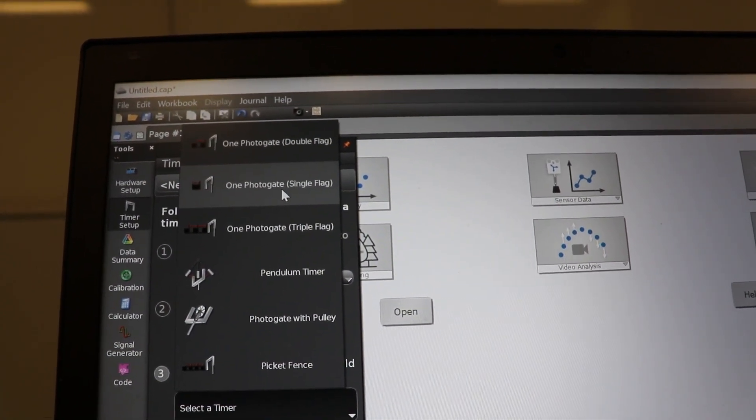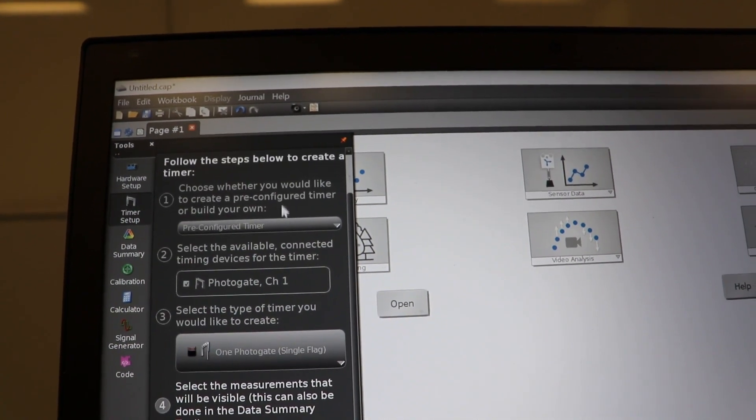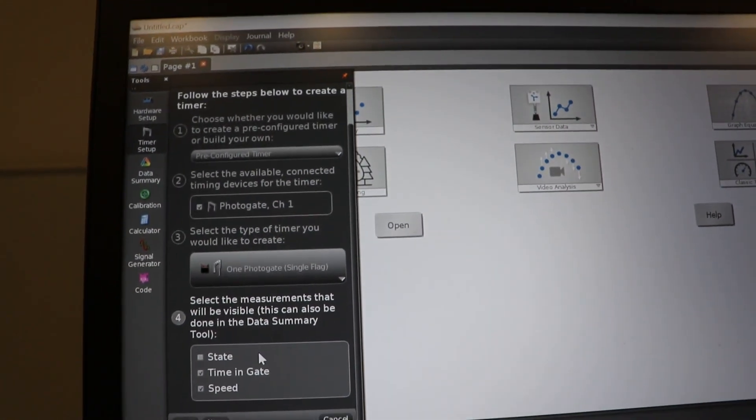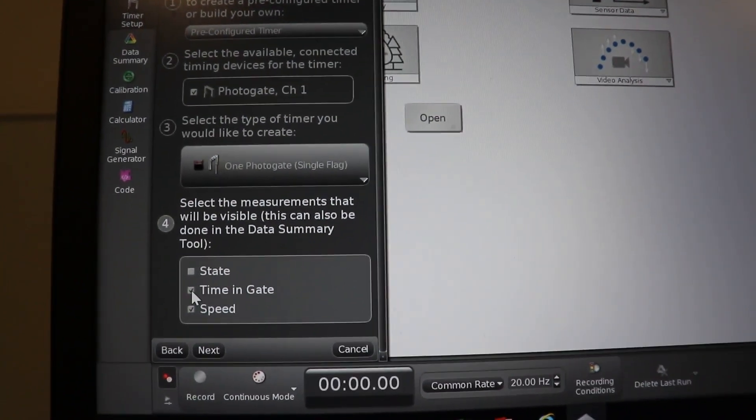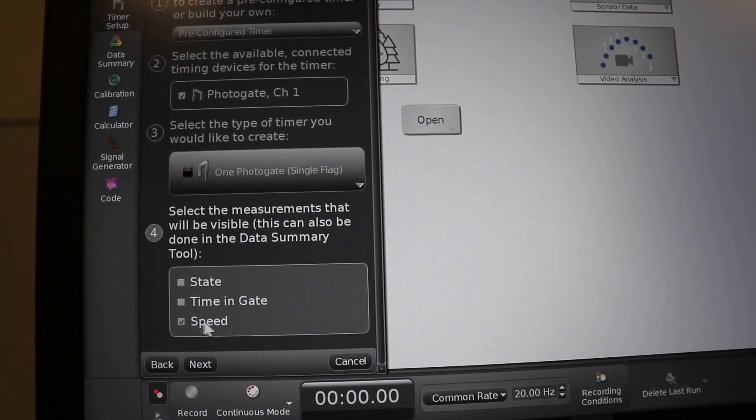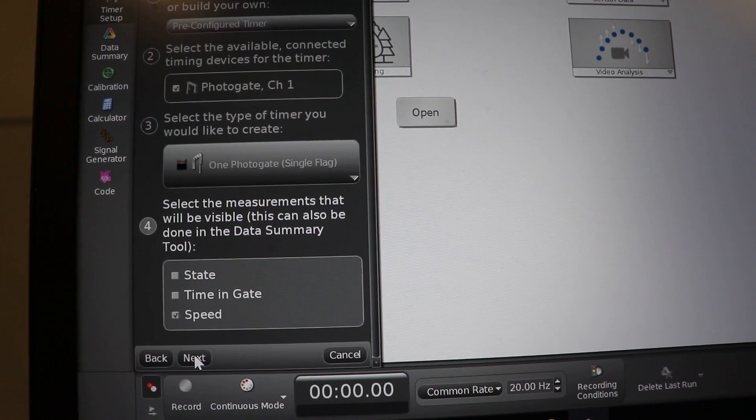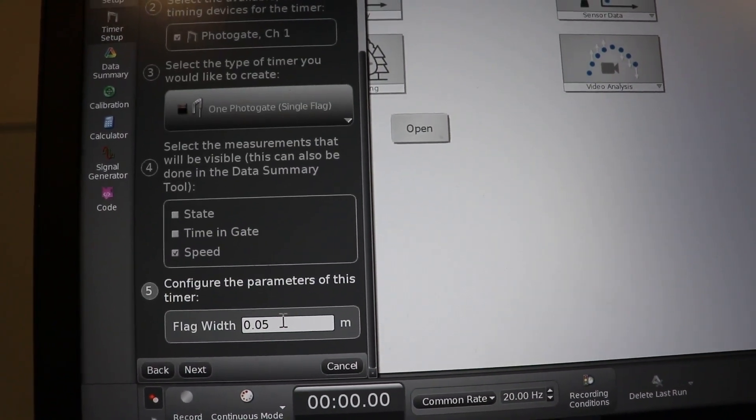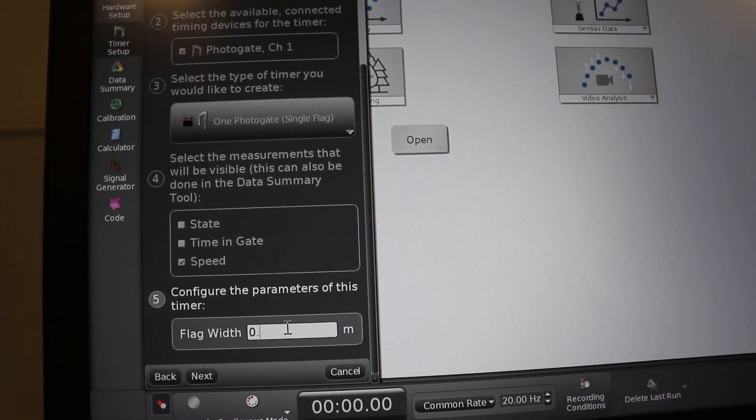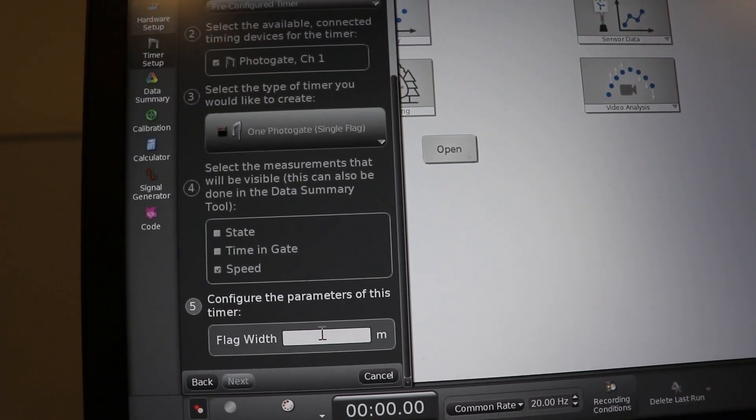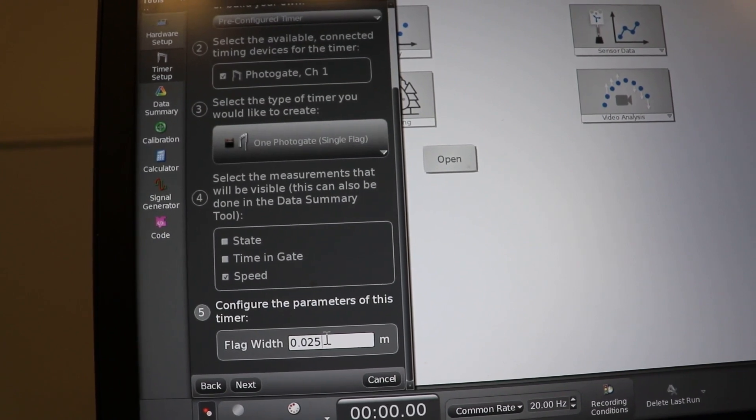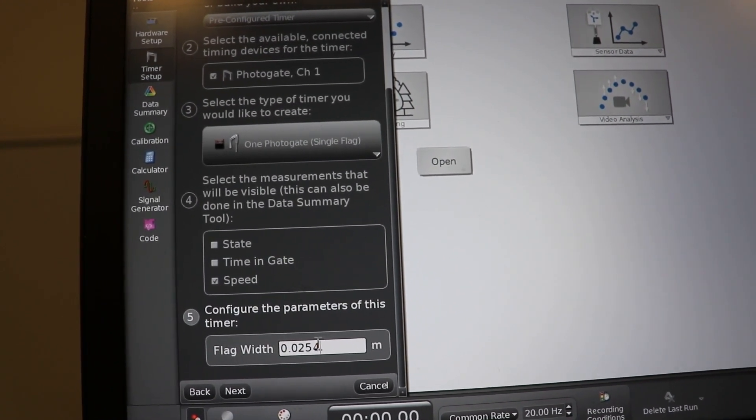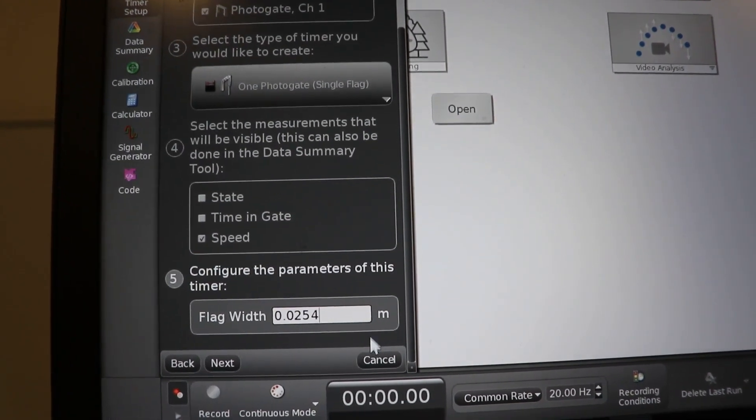Now, the flag is the ball itself. Click on that. And then you come down here, and we want... actually, we'll just take the speed. We just want the speed. And we go to the next one. And we put in the flag size. And the flag size is 0.0254. One inch is 2.54 centimeters.